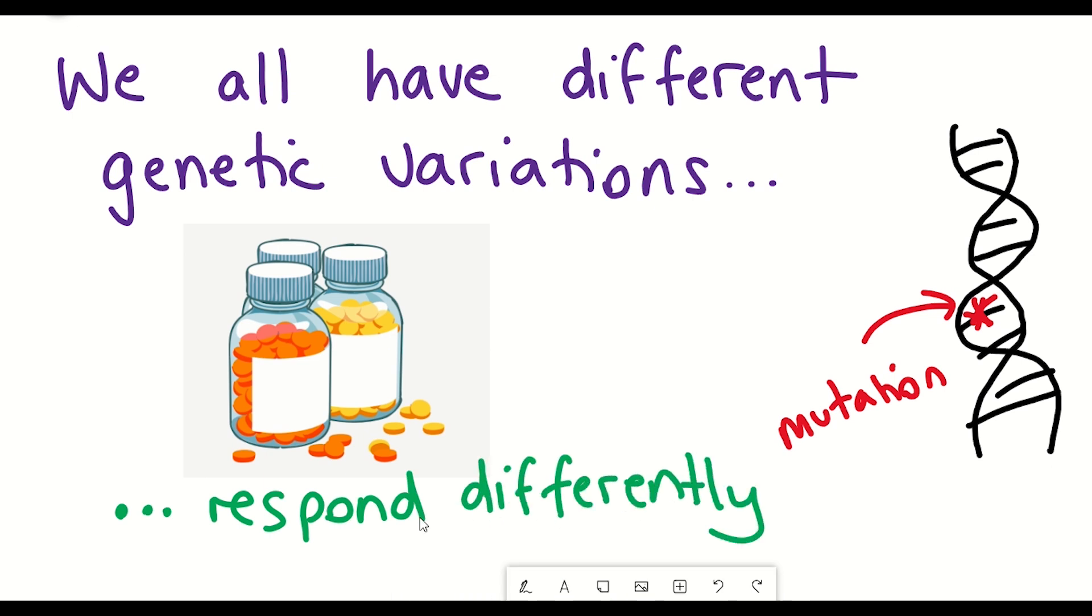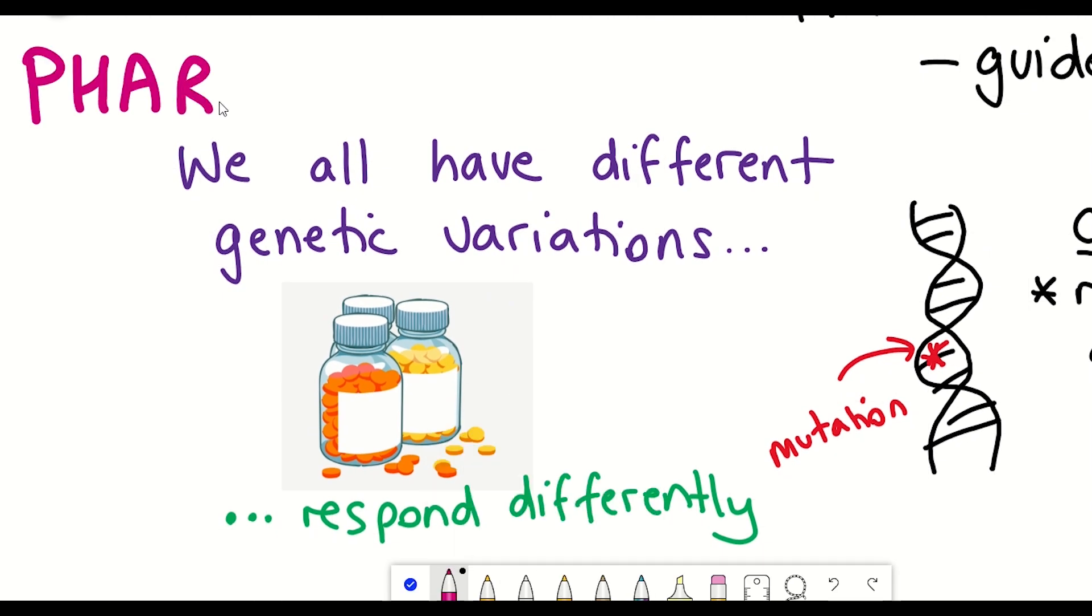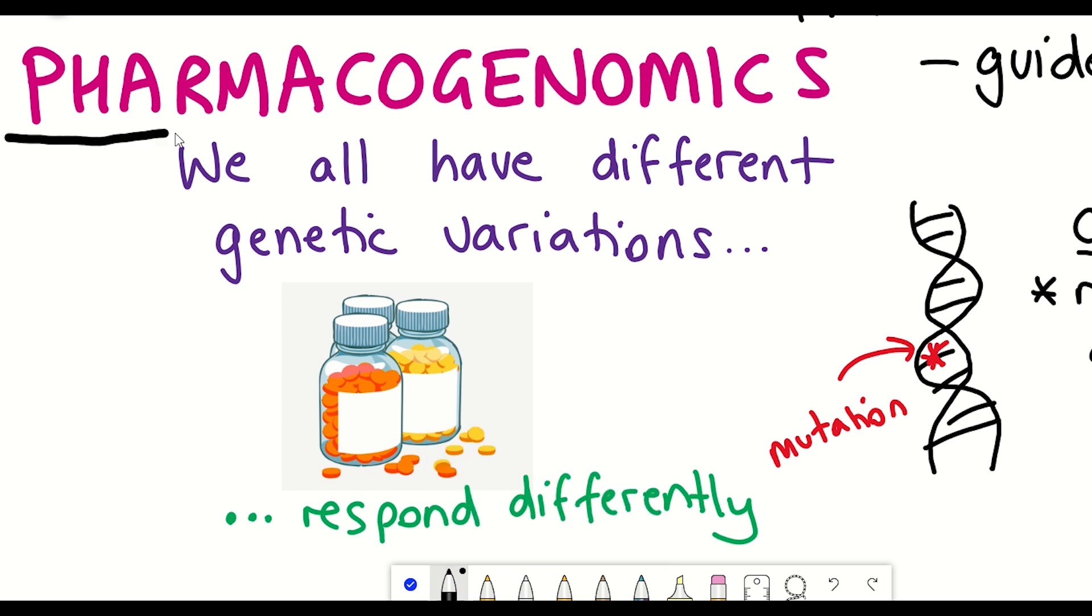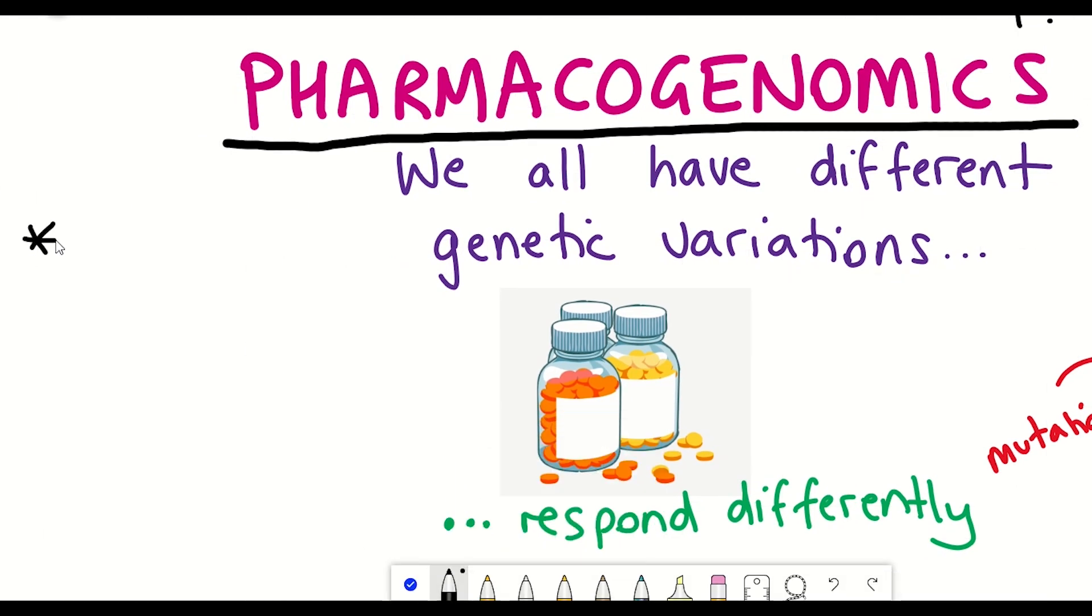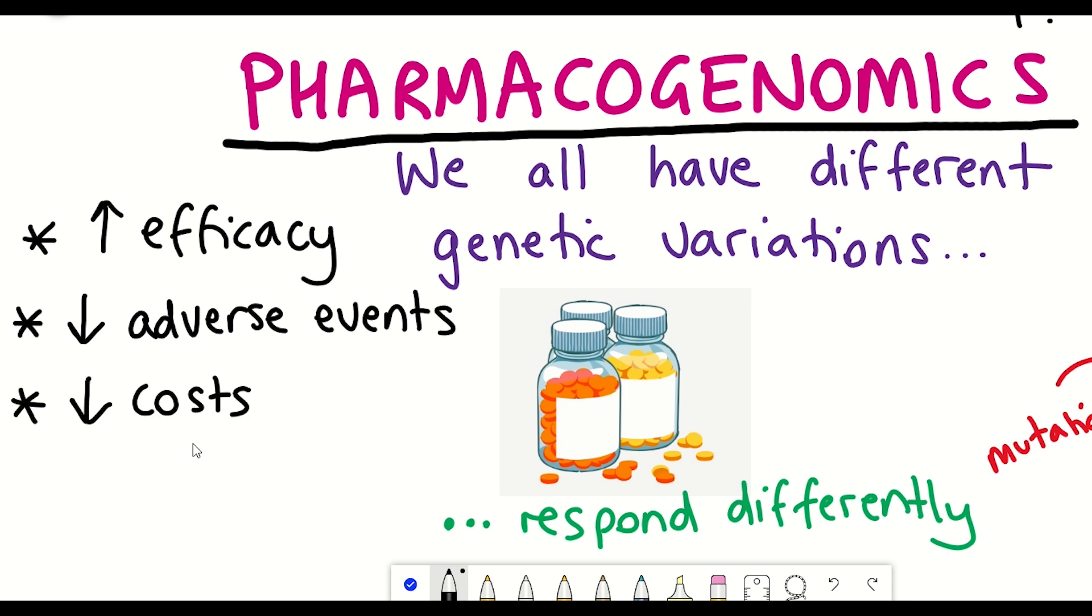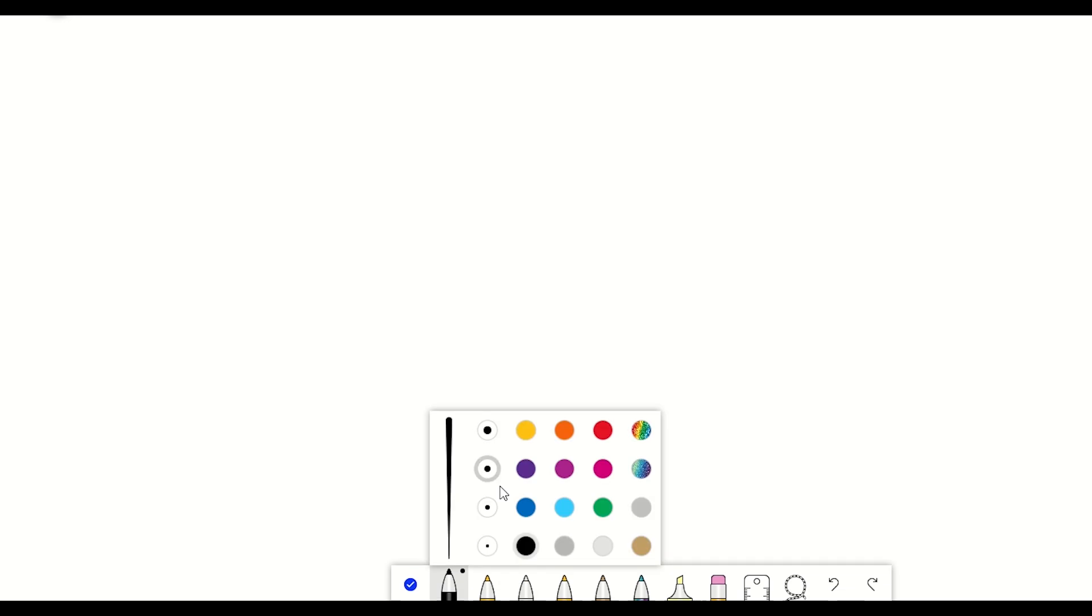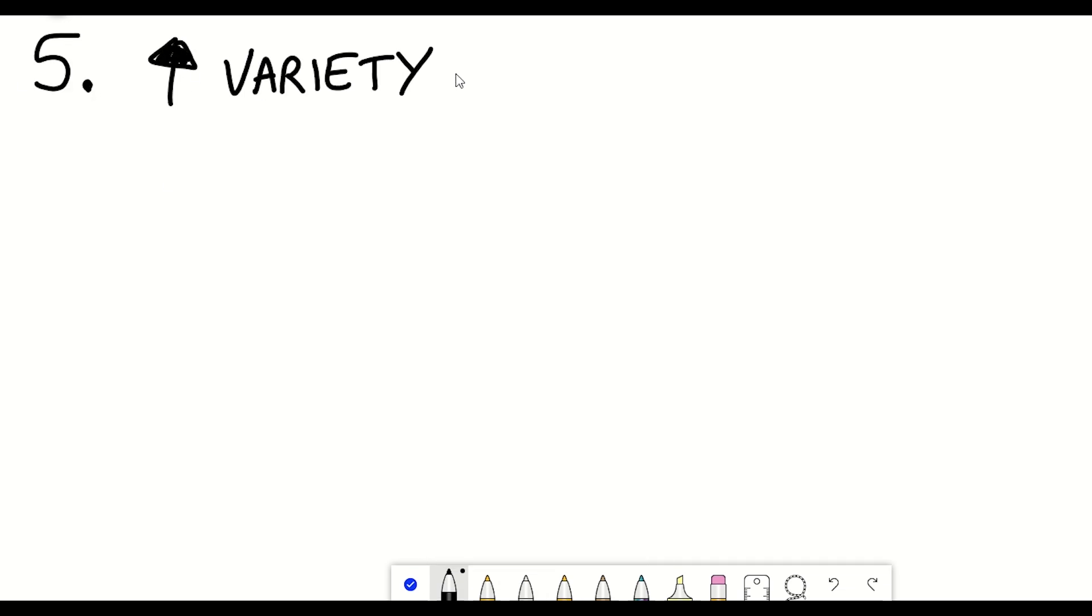And so this is where pharmacogenomics comes in, which is effectively genomics guided therapies that can improve drug efficacy, reduce adverse events, and also reduce cost by tailoring the therapy to the individual based on their genetic information. But this is just one layer of information.